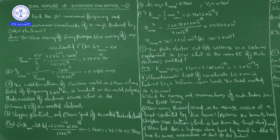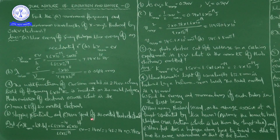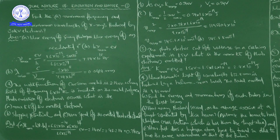Taking the square root of V_max² gives V_max = 345.8×10³ meters per second, which is 345.8 kilometers per second. So the maximum speed of the emitted photoelectrons is 345.8 km/s.